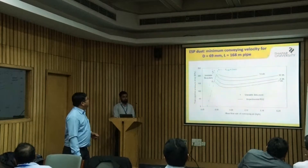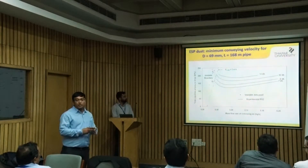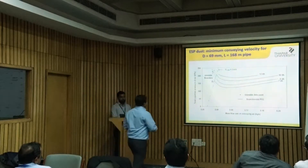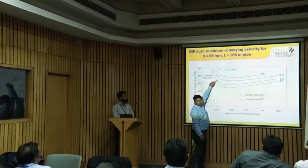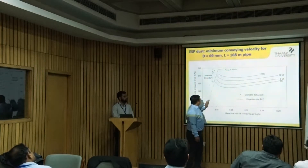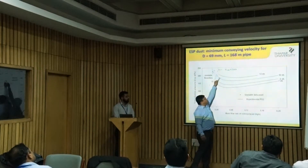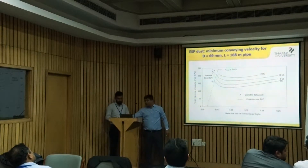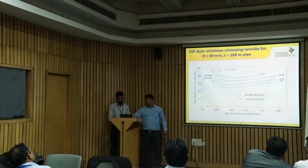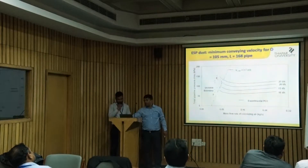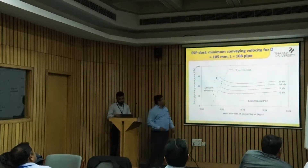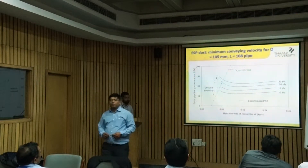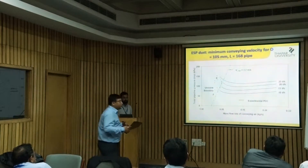We conveyed one powder through a two and a half inch diameter, 168 meter long pipeline. We drew a blockage boundary line and the corresponding velocity was coming to three meters per second. Then we replaced that line with a larger pipeline and the velocity we were getting was now 3.7 meters per second.